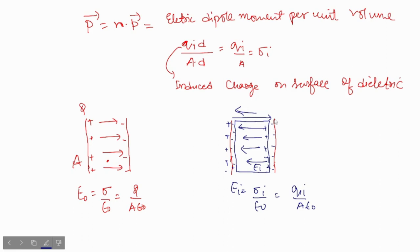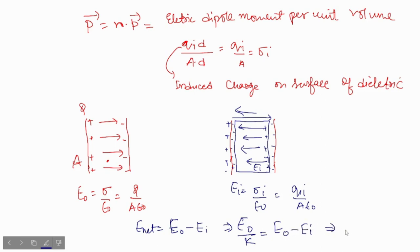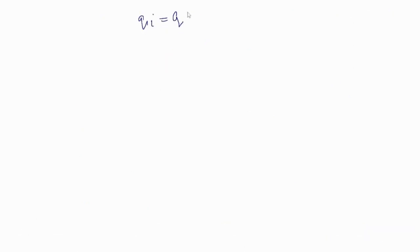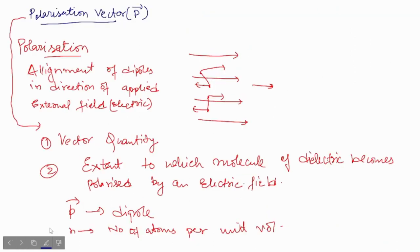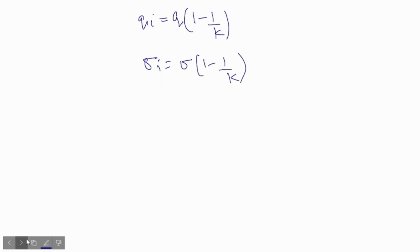The net electric field in this situation: the field due to the capacitor plates is in one direction, and the field due to the dielectric is in the opposite direction, so the net electric field E-net equals E-naught minus E_i, which equals E-naught divided by k. This implies E_i equals E-naught times (1 minus 1/k). Similarly, the induced charge qi equals q times (1 minus 1/k), and the induced surface charge density sigma_i equals sigma times (1 minus 1/k). This gives you the induced surface charge density and relates to the polarization vector. Thank you.